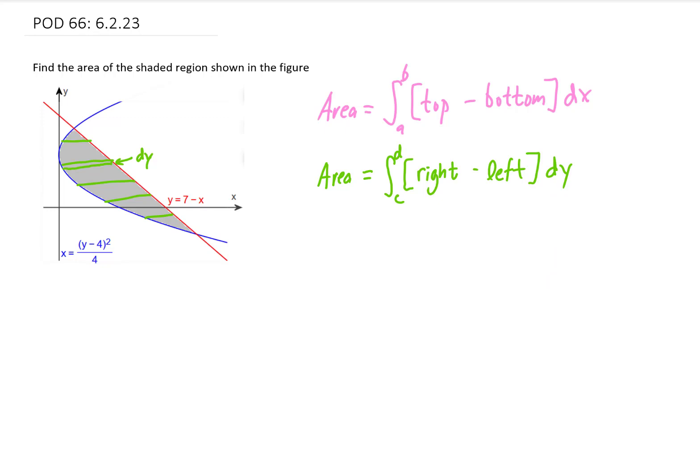So if we are integrating with respect to y, we need both of our functions in terms of y. That means x needs to be solved for. For this function over here, that has already been done. But for this function here, we need to rewrite this by adding x to both sides and subtracting y from both sides as x equals 7 minus y.